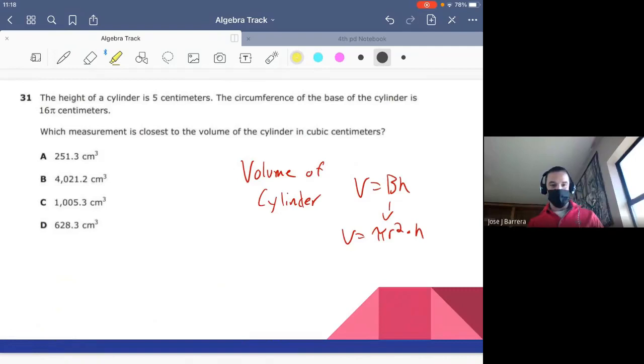31. I'm going to read the question and then we go back. Which measurement is closest to the volume of the cylinder? So I copy down the formula for volume of a cylinder. V equals capital BH. Capital B is the area of the base. So the height of a cylinder is 5 centimeters. So we have our height to be 5.